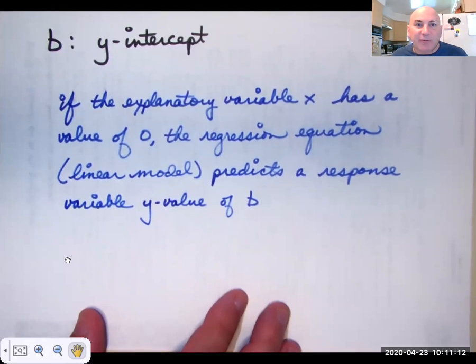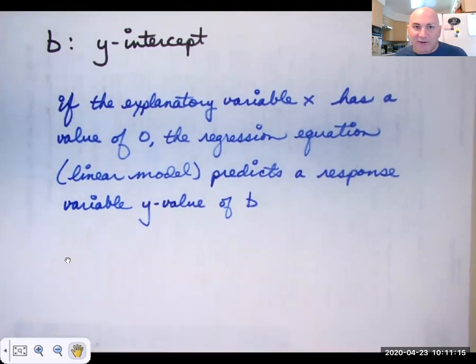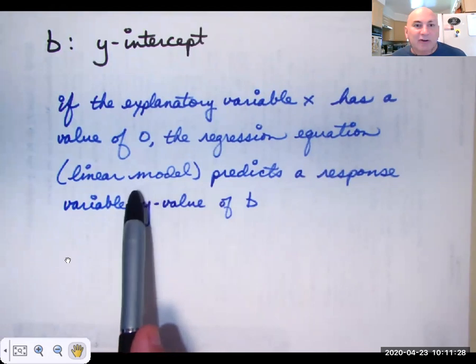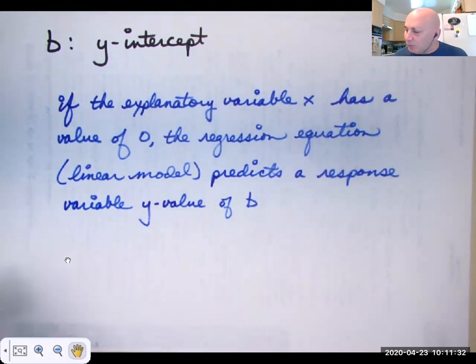And an interpretation of the Y-intercept is if the X variable, the explanatory variable has a value of zero, that means your point is going to be on the Y axis, your regression equation, which is the model that you're using to represent the data set, it'll predict a Y variable of B. Now, I've talked in the past about how that isn't always a reasonable value. And it says that on your term handout. It's not always a reasonable value. For instance,